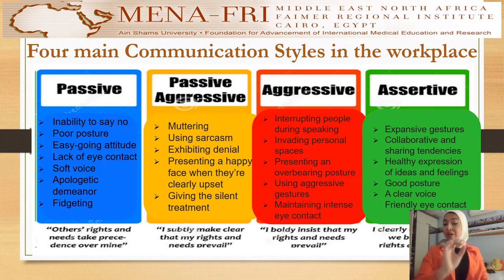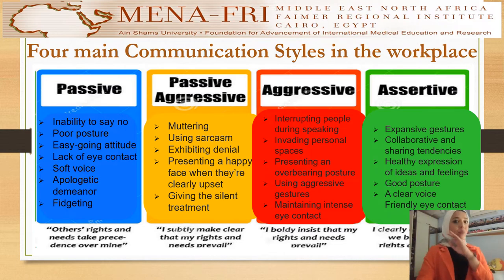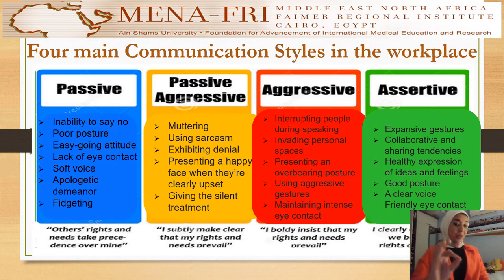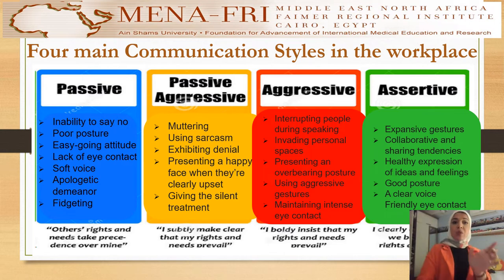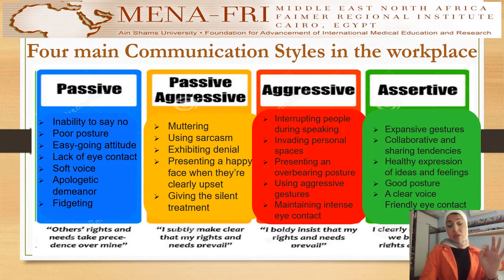Every person has a unique communication style — a way in which they interact and exchange information with others. There are four communication styles: passive, passive-aggressive, aggressive, and assertive. It's important to understand each communication style and why individuals use them. When we break down these four styles, we'll better understand the characteristics of each style, standard phrases, and what makes them unique.